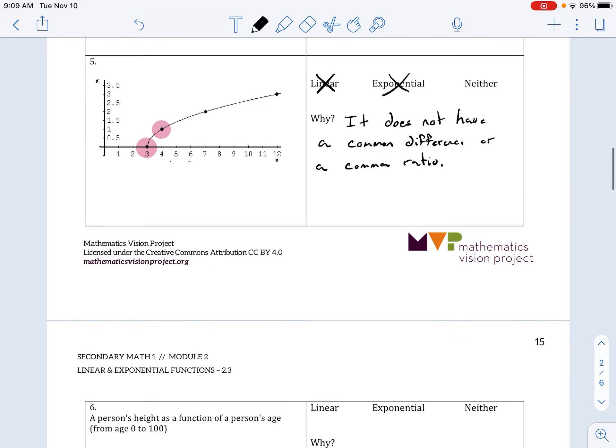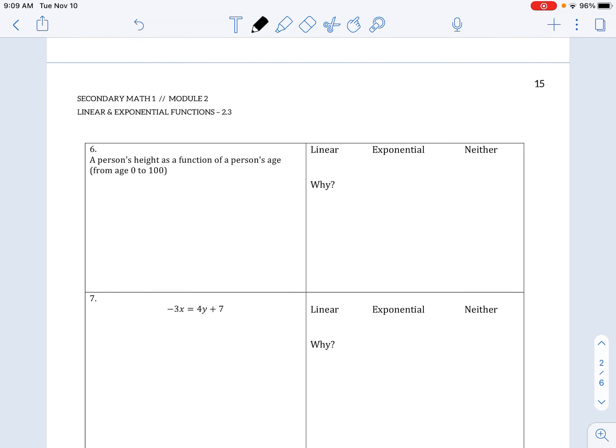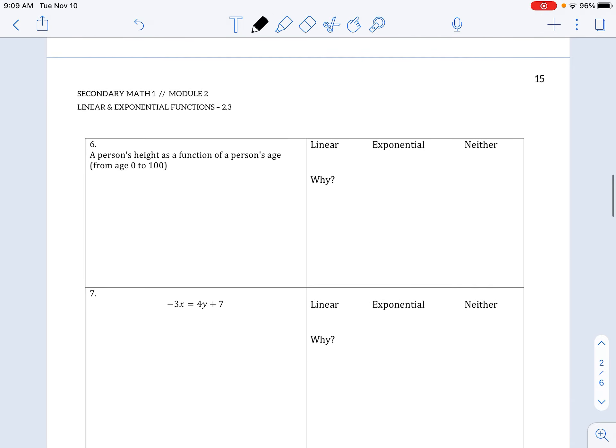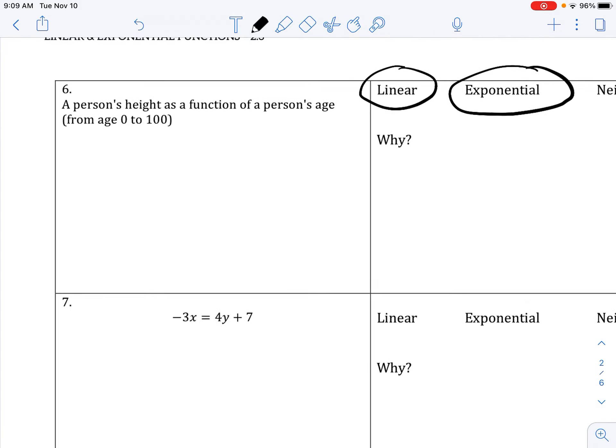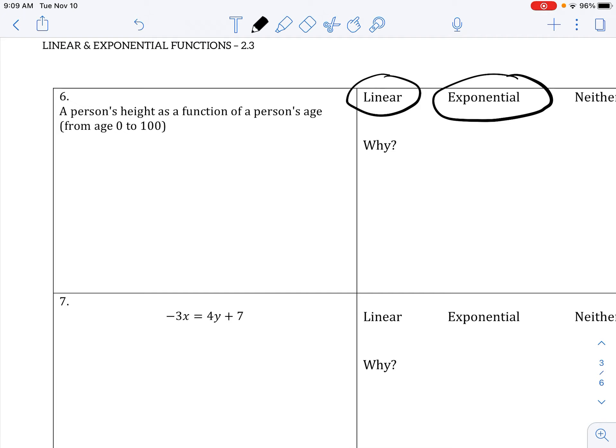And we're not going to go through them all together, but what we have to basically look at is does it have a common difference or constant rate of change, or does it have a common ratio? And some of it's just going to be using your intuition. For example, 6: a person's height as a function of a person's age from 0 to 100. So it might make sense to create a graph.